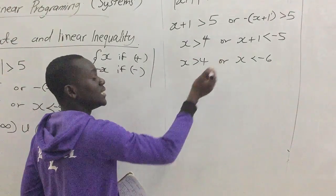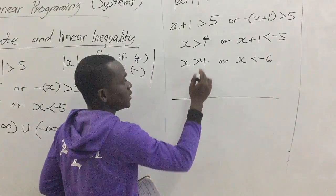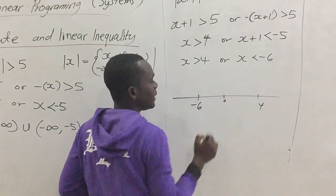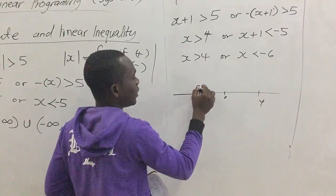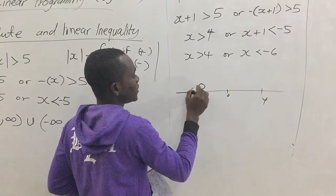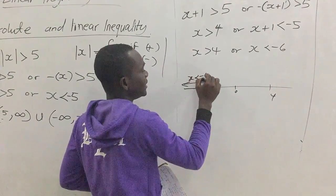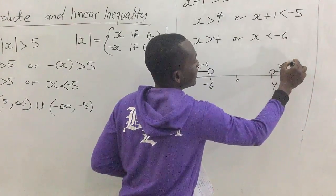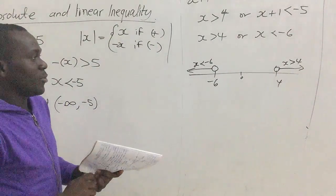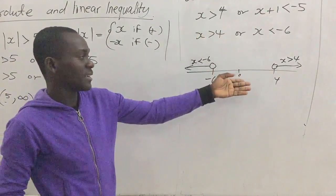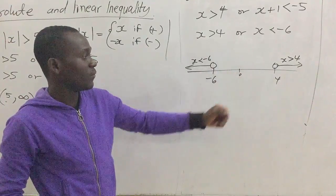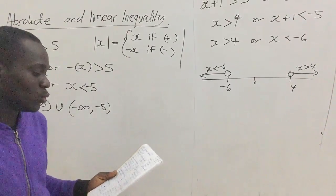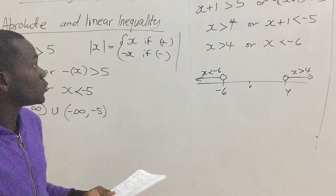To represent this on a number line: we place negative 6 and 4 on the number line with zero somewhere in between. We draw the solution set — x less than negative 6 going left, and x greater than 4 going right. This is how we actually work inequalities with absolute functions in them.